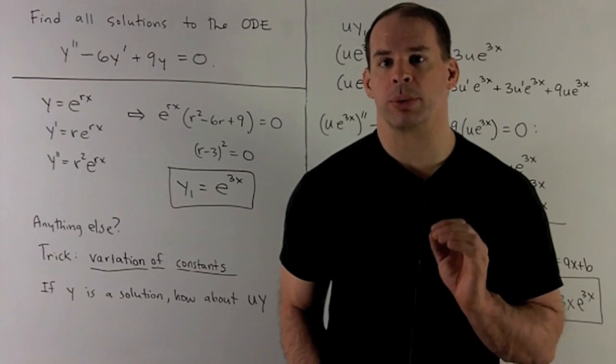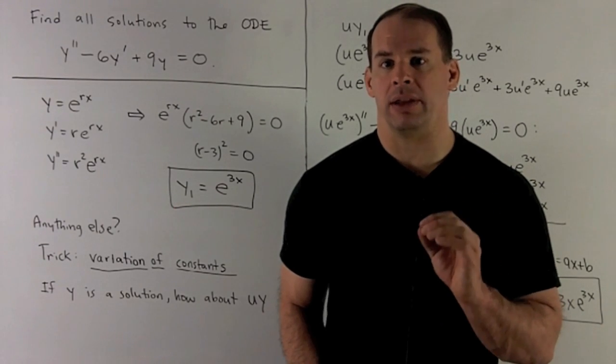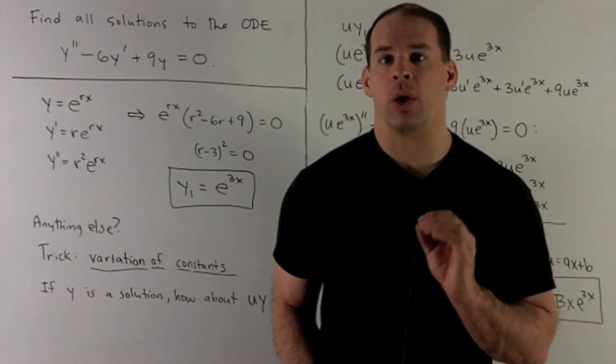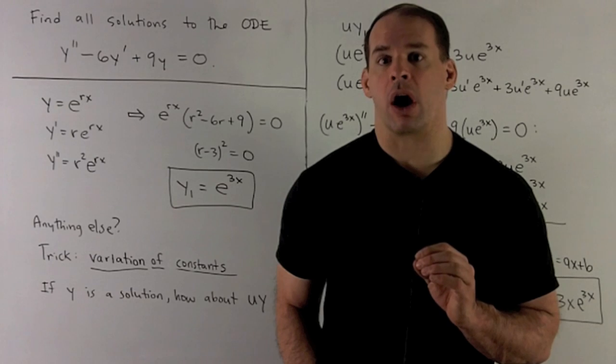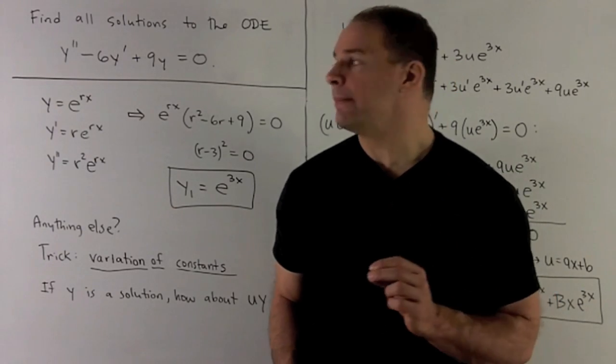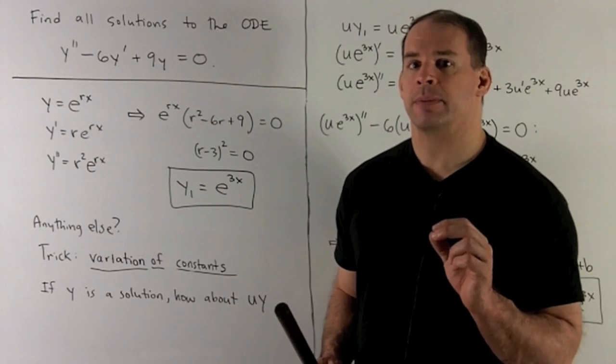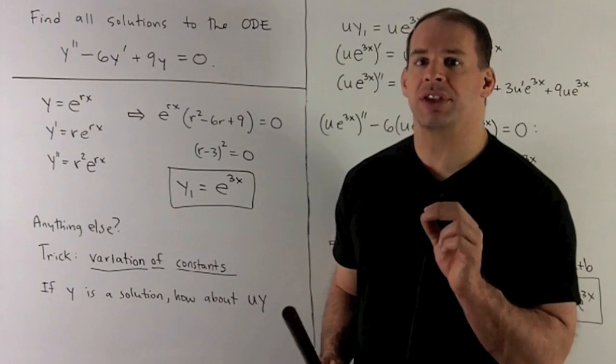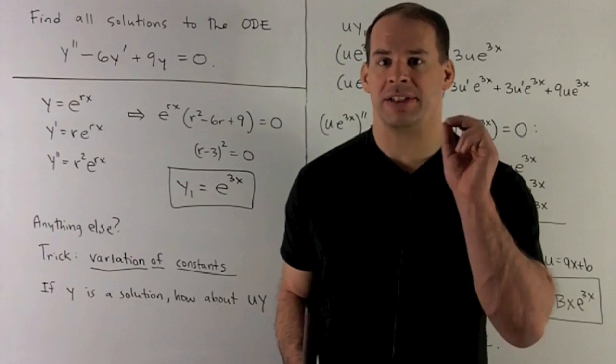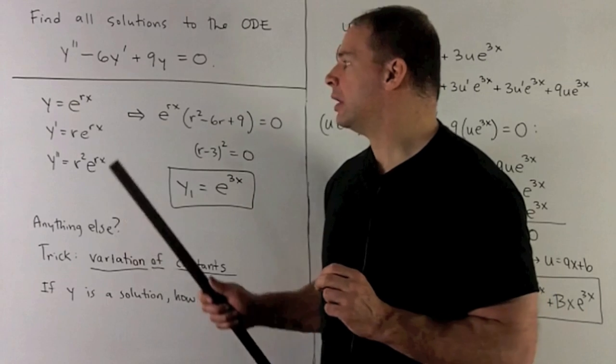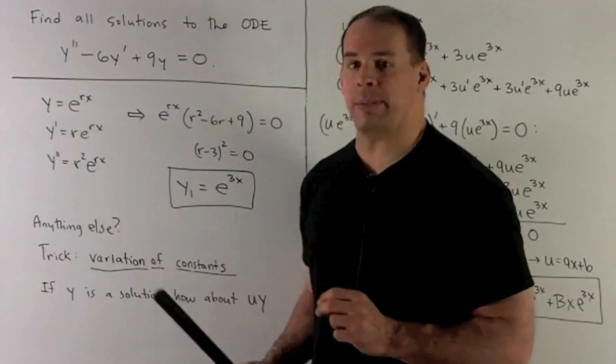I begin with our usual procedure. We assume we have solutions of the form y equal to e to the rx. I put that into our ODE and see what comes out. That'll narrow down possibilities for r. So we do that of y equal to e to the rx. We'll need the first and second derivatives. So the derivative of e to the rx, I take the derivative of e to a function. I just return e to that function and then take the derivative of the function by the chain rule. So for the derivative, we just bring down an r. Second derivative, we bring down another r, giving me an r squared.